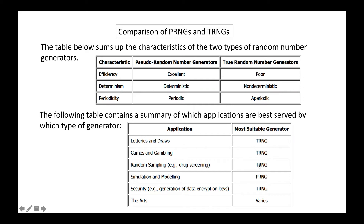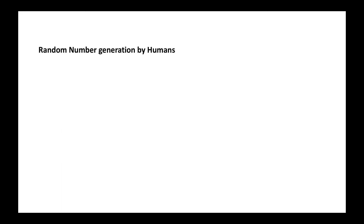True random number generators produce fewer numbers, so they are suitable when a lesser number of random numbers is needed. For simulation and modeling, which require millions of random numbers, pseudo random number generators are best. For security applications like generating data encryption keys, fewer but completely independent random numbers are needed, so true random numbers serve better. For arts applications, either type may be suitable depending on the requirement.